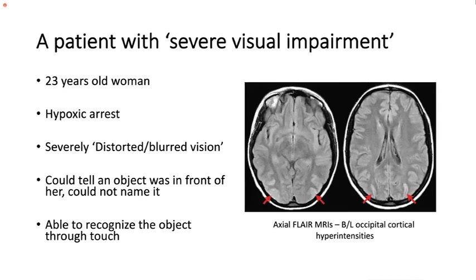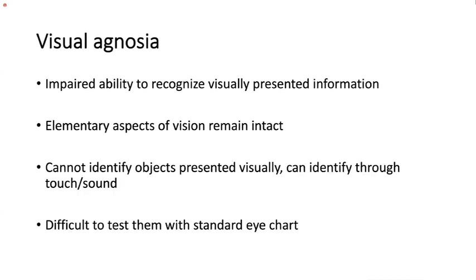Visual agnosia: a 23-year-old woman after hypoxic arrest presents with severely blurred vision, unable to name objects presented visually. However, if the object is placed in her hand, she can recognize it. MRI shows bilateral occipital cortical hyperintensities in the watershed zone. Visual agnosia is impaired ability to recognize visually presented information despite normal elementary vision. The person cannot identify objects visually but can do so through touch or sound. These patients have difficulty processing visual forms, making standard visual acuity testing difficult.